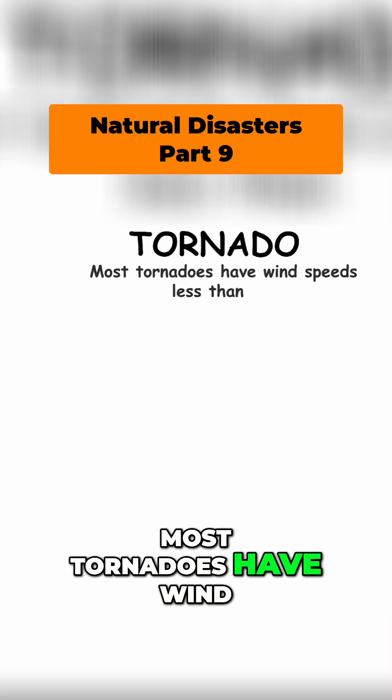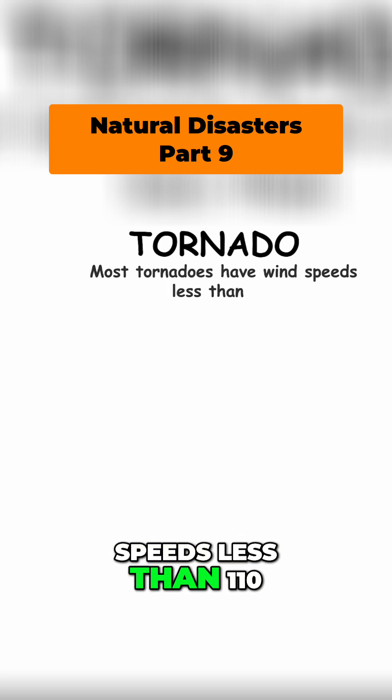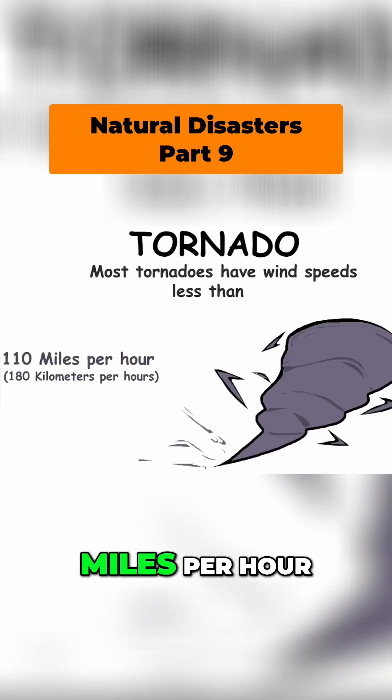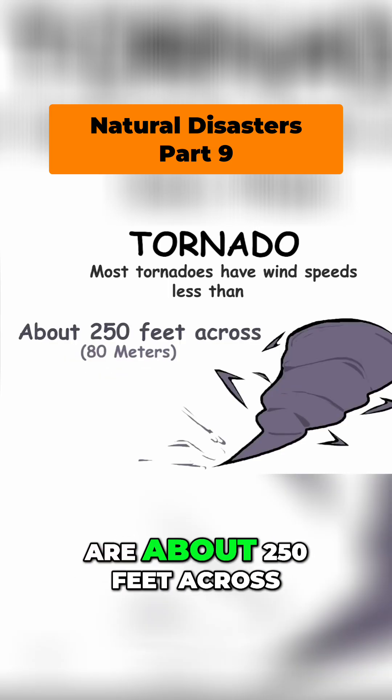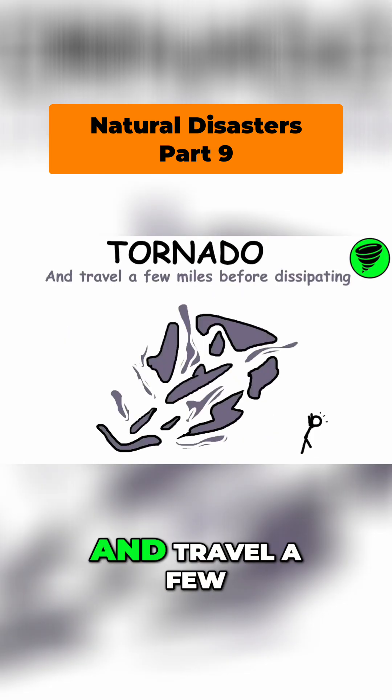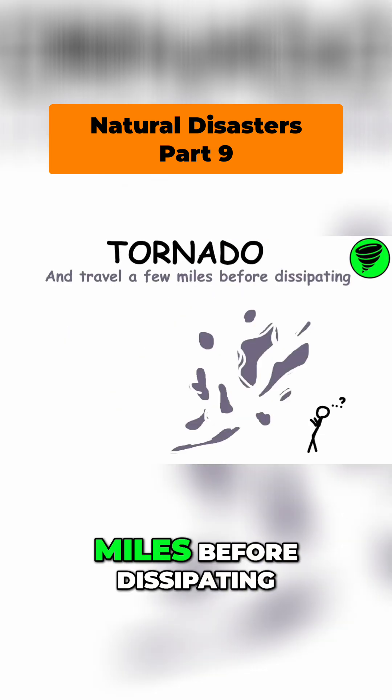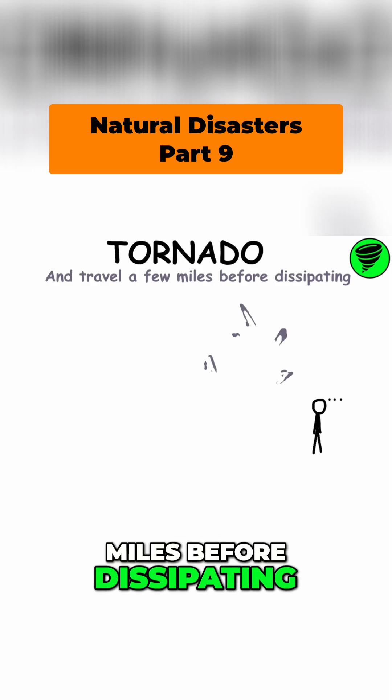Most tornadoes have wind speeds less than 110 miles per hour, are about 250 feet across, and travel a few miles before dissipating.